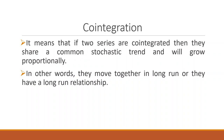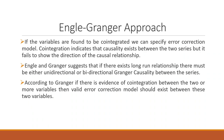So it means that if the two series are co-integrated, then they share a common stochastic trend and will grow proportionally. In other words, they move together in the long run, or they have a long-run relationship. So if the variables are co-integrated, we can specify the error correction model.